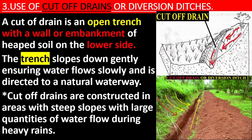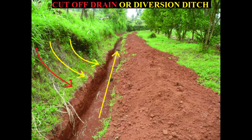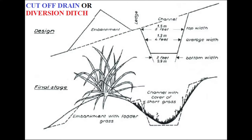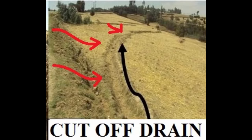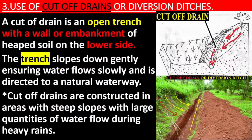Use of cut-off drains or diversion ditches. A cut-off drain is an open trench with a wall of heaped soil on the lower side. The trench slopes down gently ensuring water flows slowly and is directed to a natural waterway. Cut-off drains are constructed in areas with steep slopes with large quantities of water flow during heavy rains.